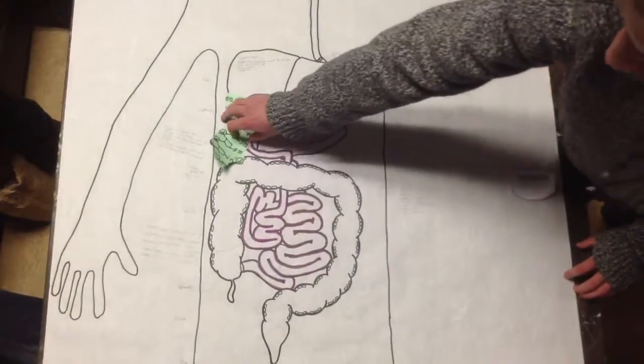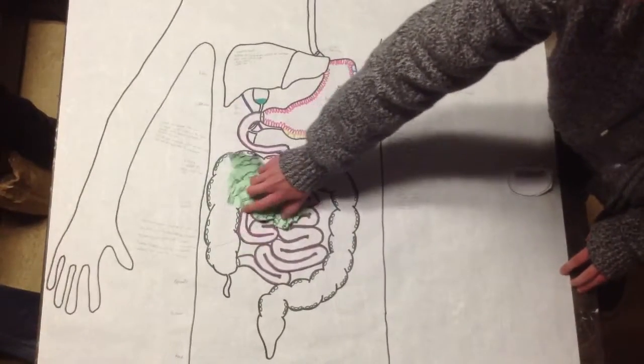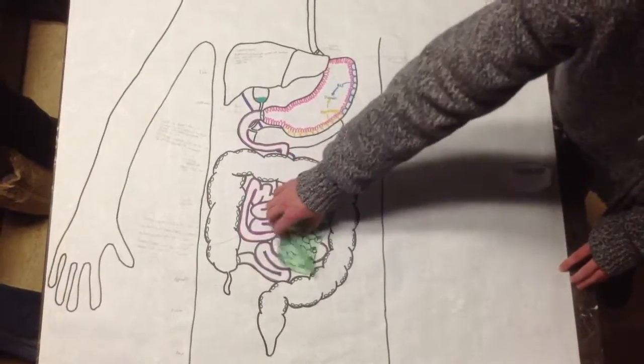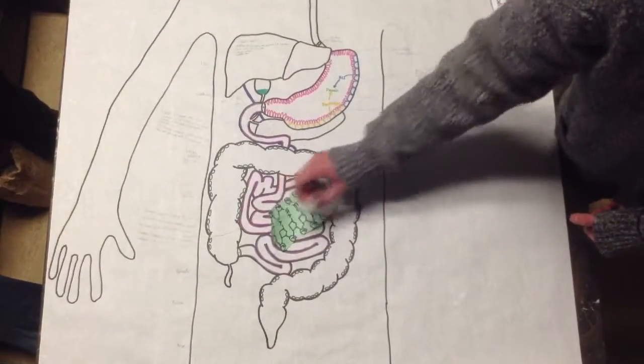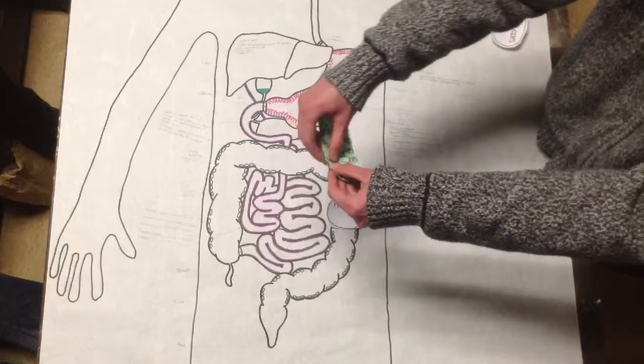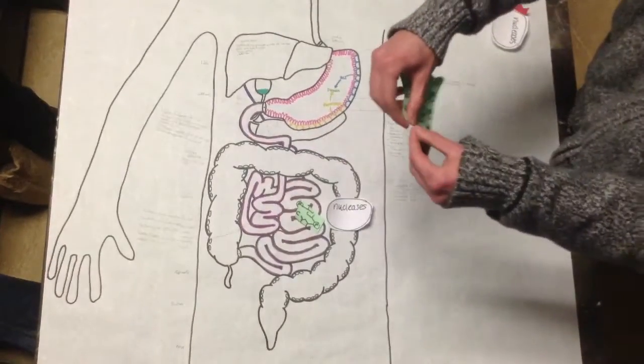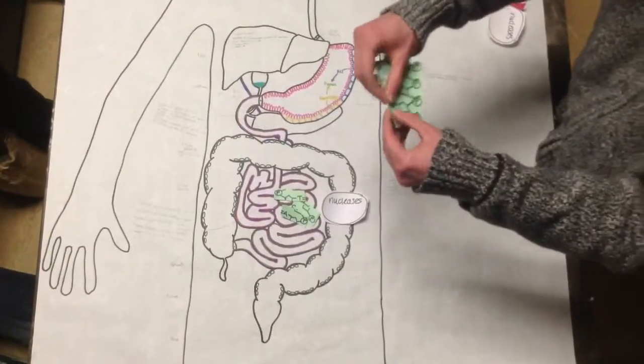As our half of the peas carries on its way down the small intestine, it will meet the jejunum where it will again meet nucleases. Our nucleases will digest our half of our peas into nucleotides one at a time all the way down.